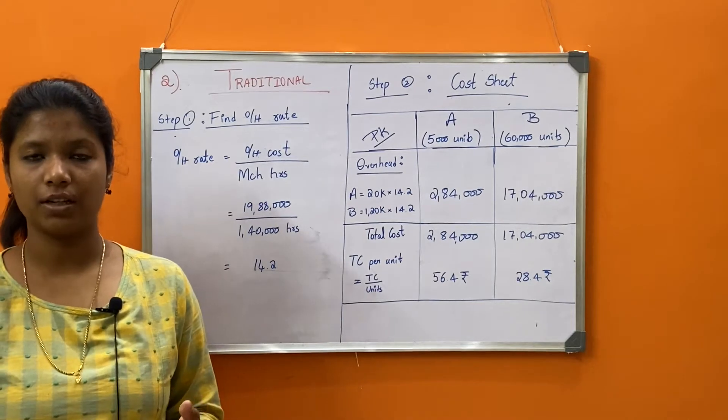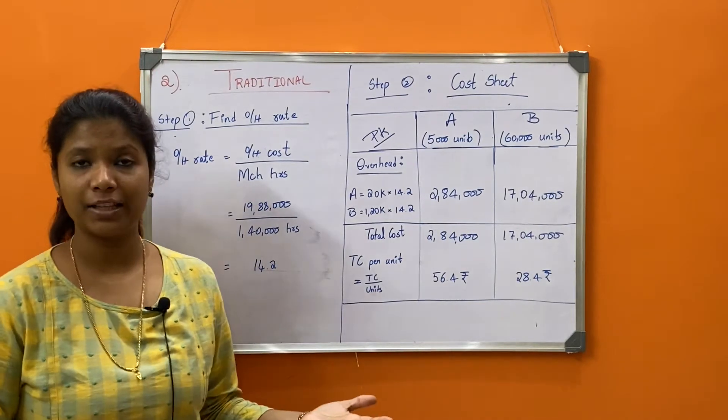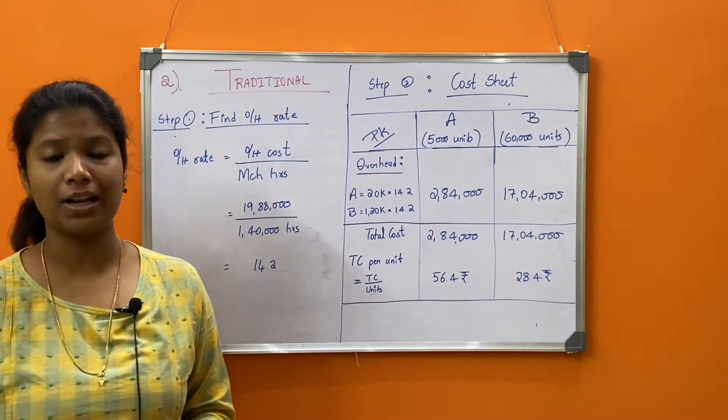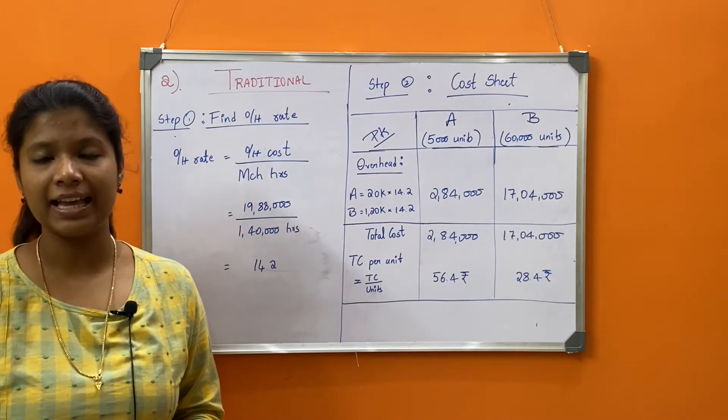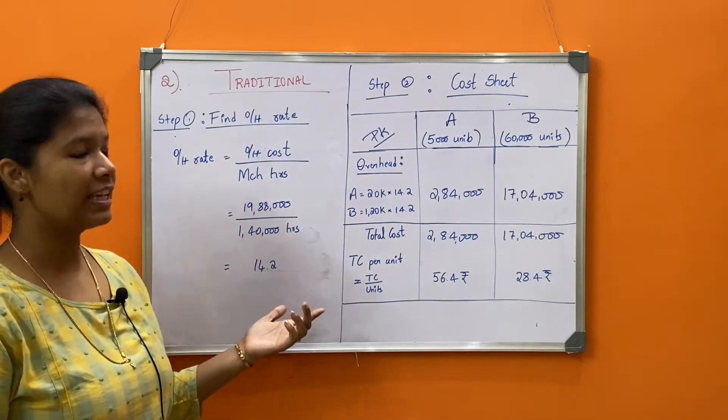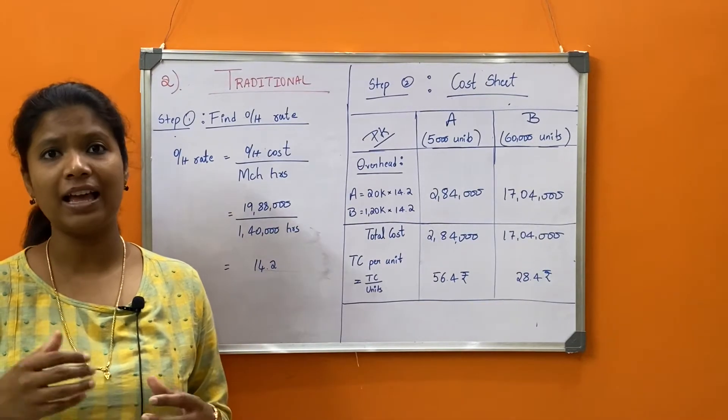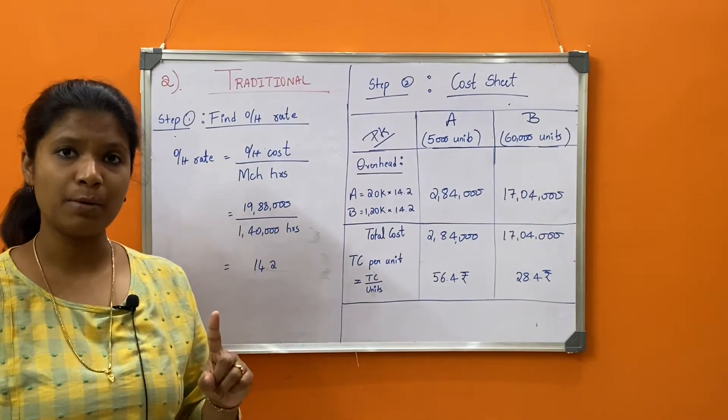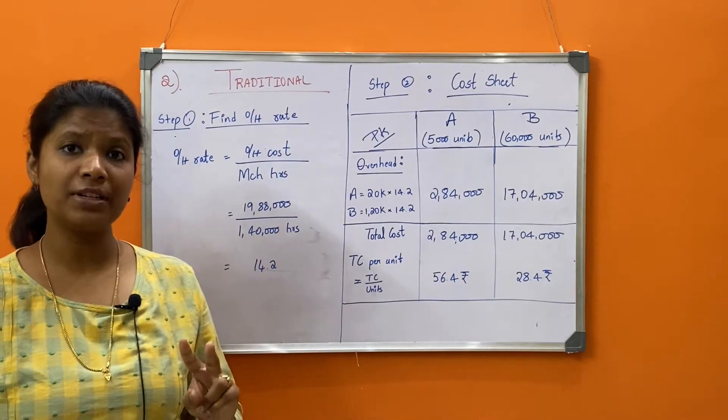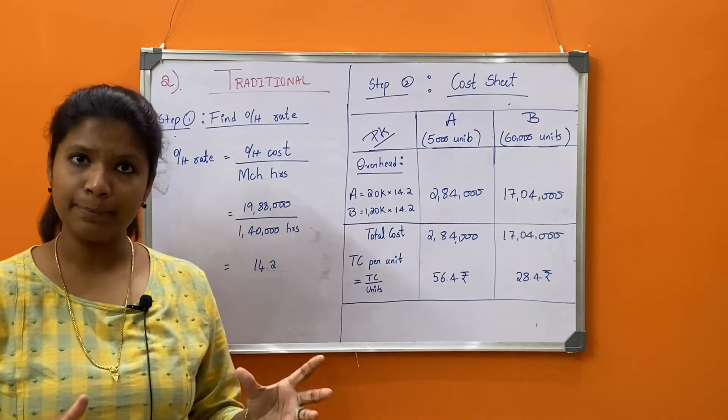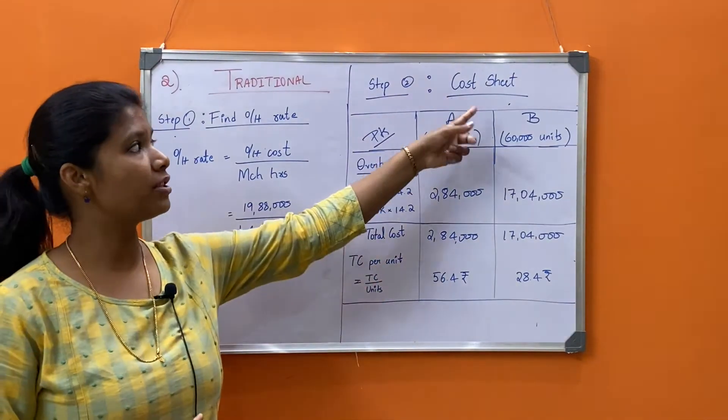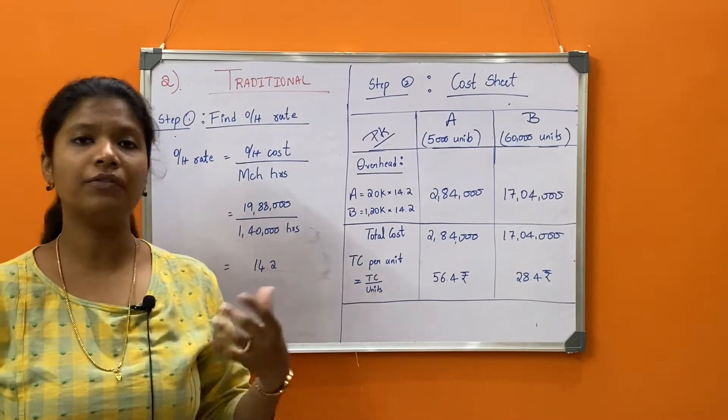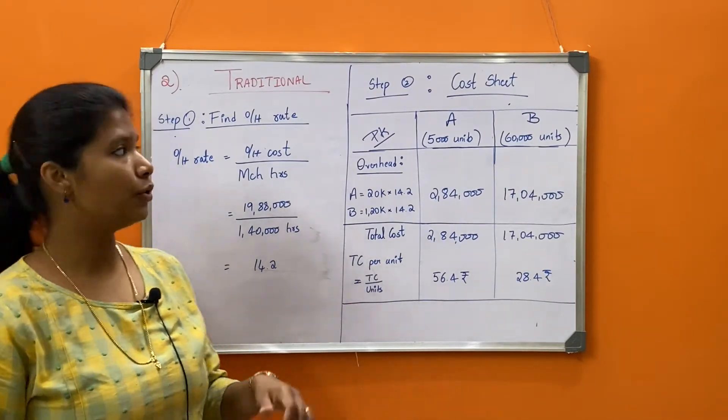So today we'll be doing our second question under ABC costing. Like we did the first question where we had to find out the overhead cost or the total cost per unit under both methods - traditional costing as well as ABC method of costing. This question gives us details about both ways of costing. Under traditional, same two steps will be followed: Step one is find out the overhead rate, step two is find out the cost per unit of each product, or in short it's called the cost sheet. Let's solve this second question.